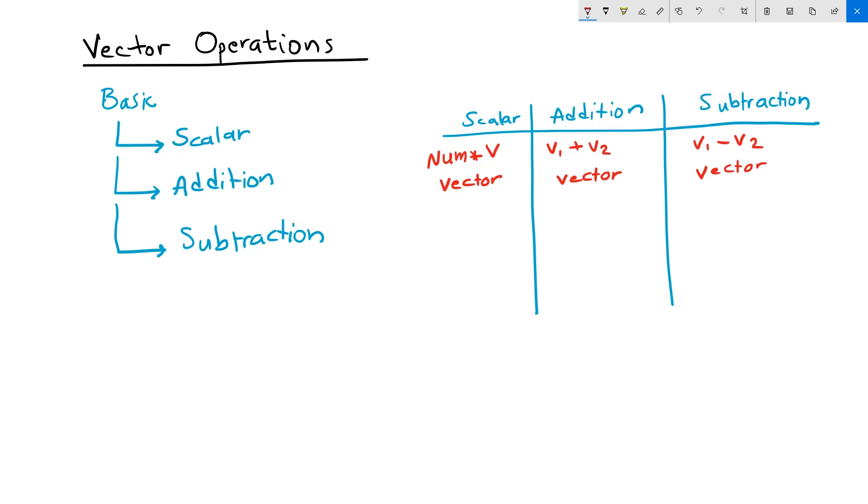The meaning of the resulting vector in a scalar operation is scaling the length of the input vector.